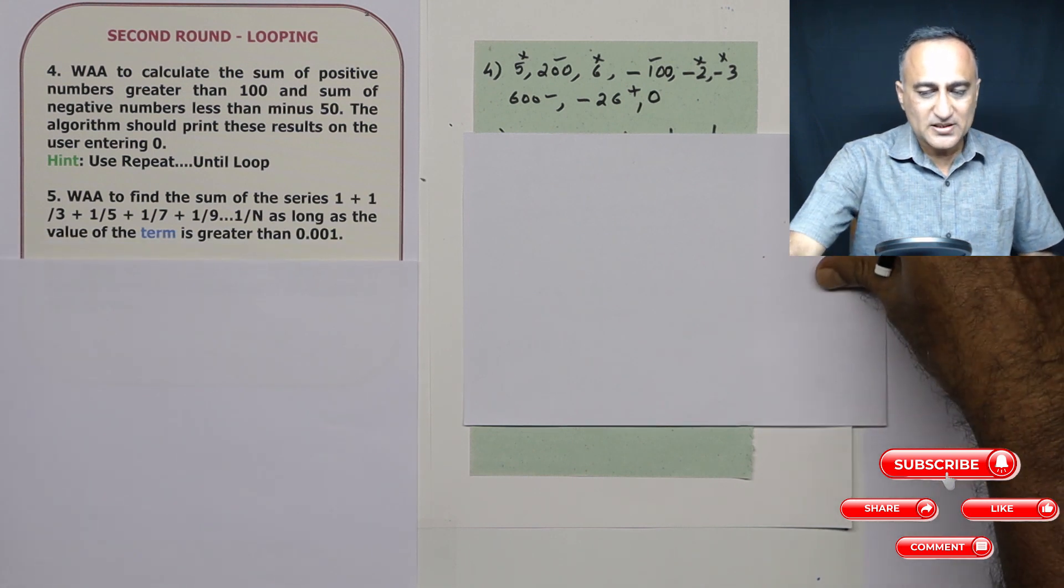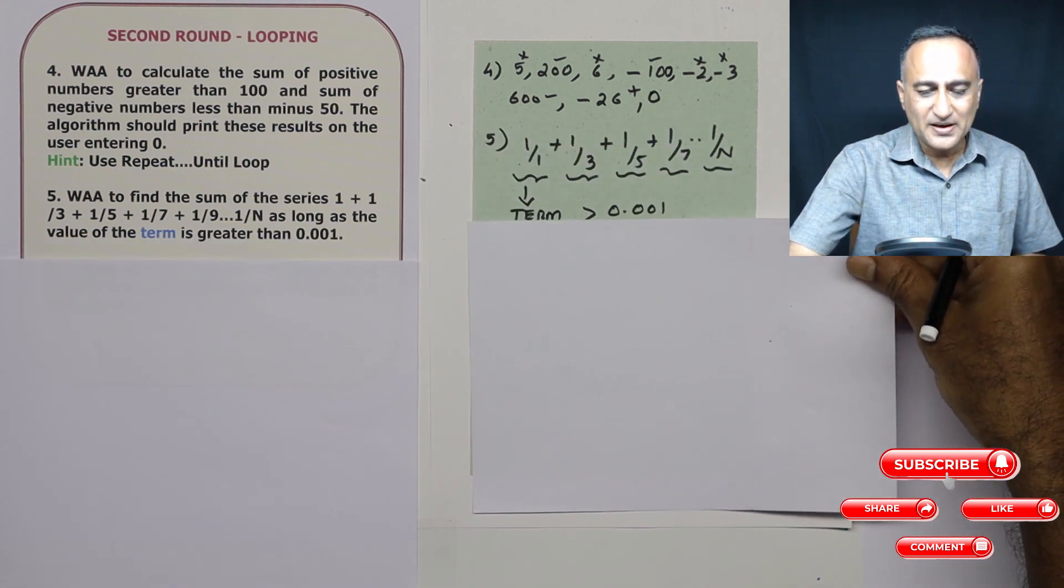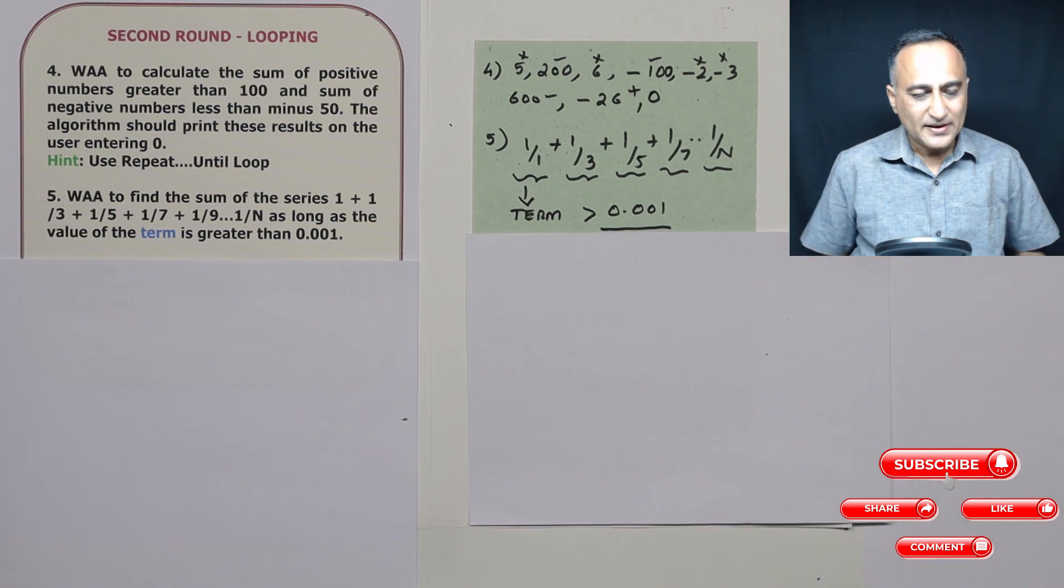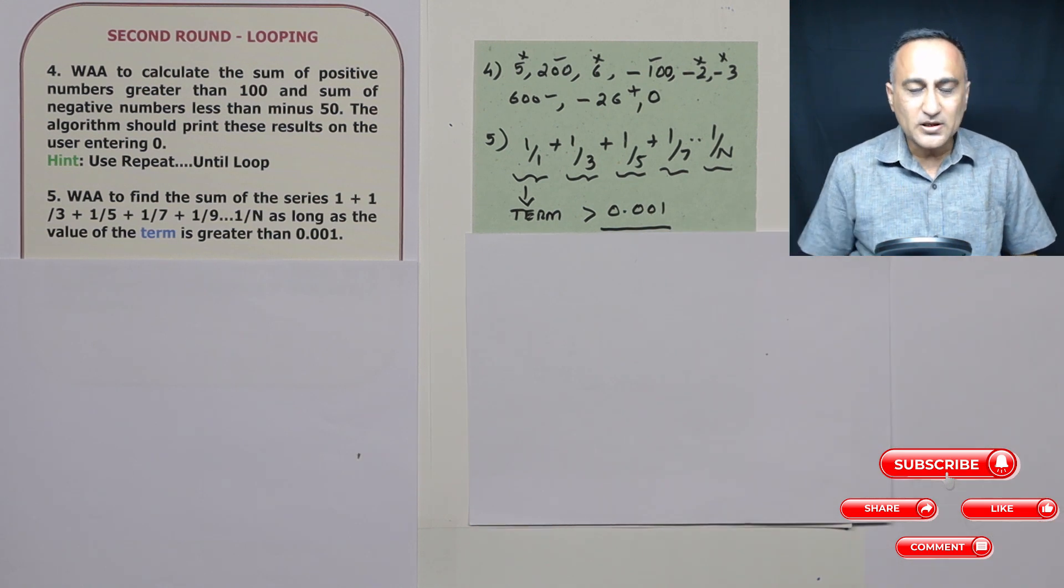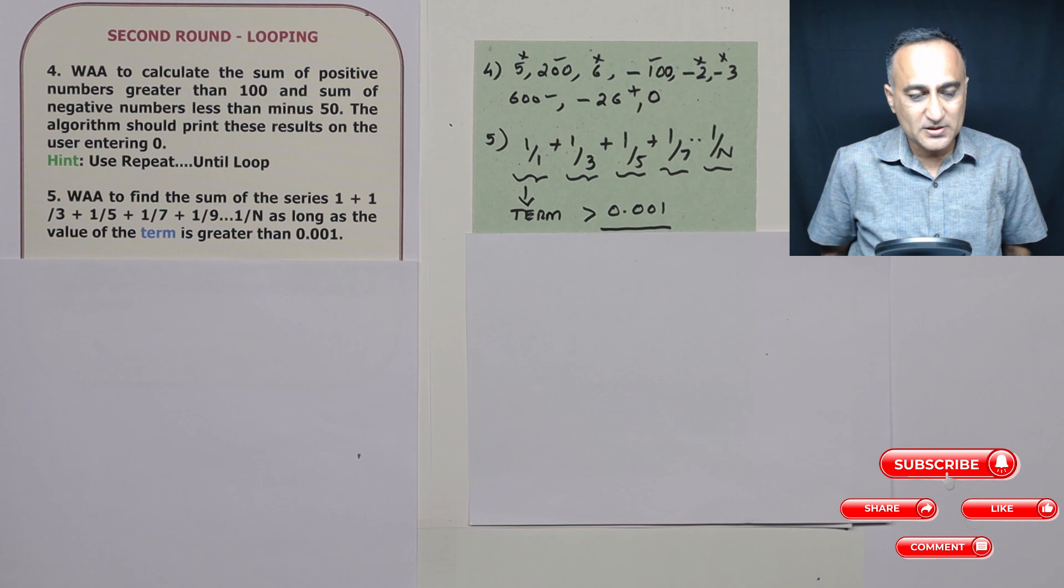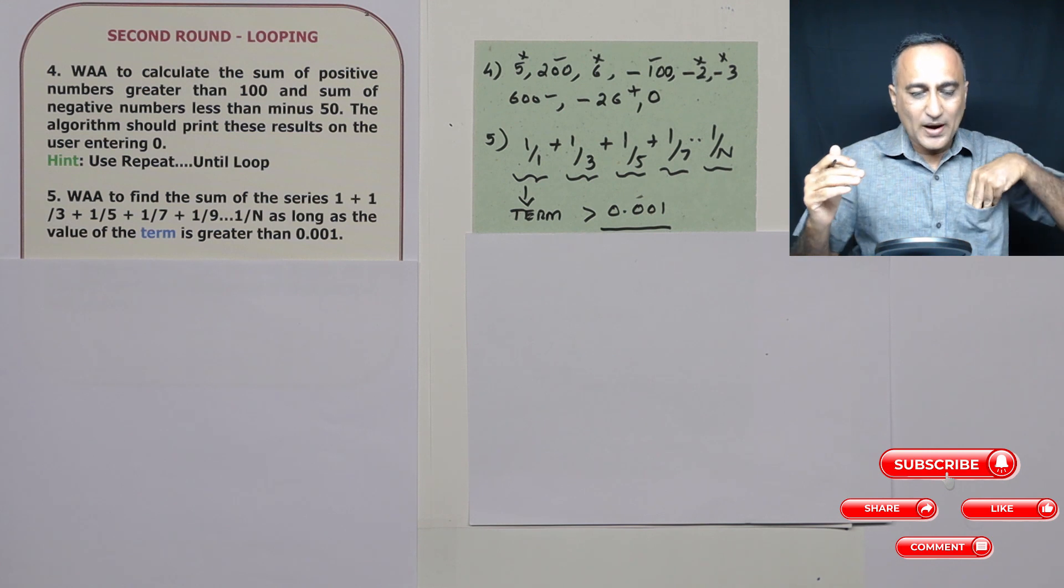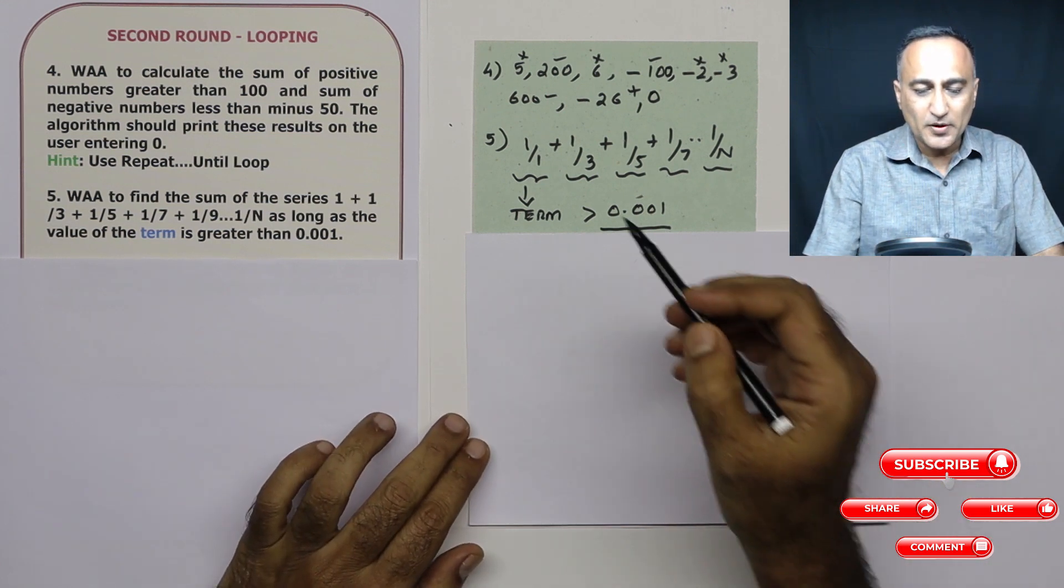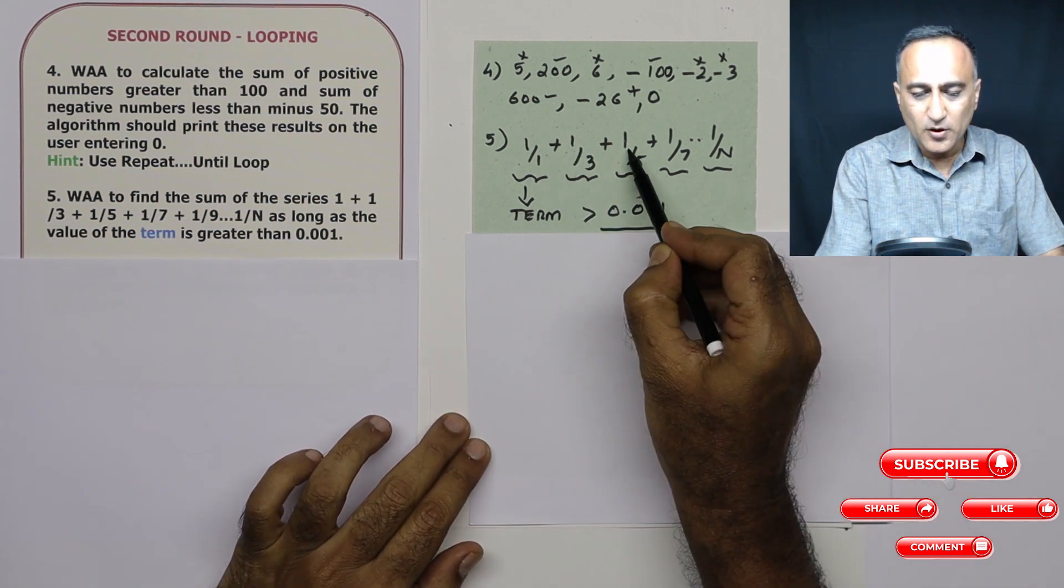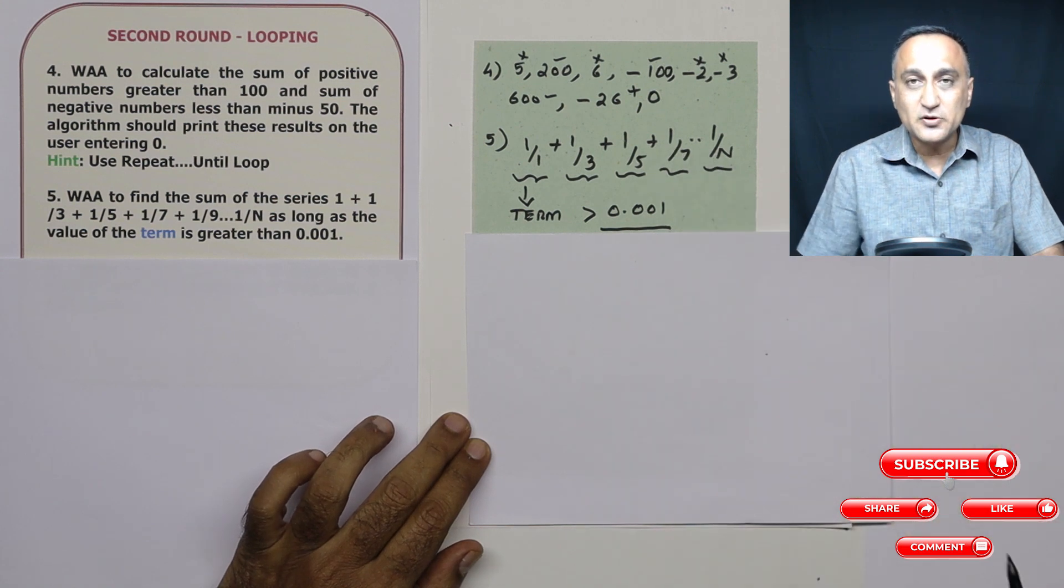Now let's try to understand the next one. This is a simple series: 1 upon 1 plus 1 upon 3 plus 1 upon 5 plus 1 upon 7 plus 1 upon 9. You need to find the sum of this series as long as the value of the term is greater than 0.01. So these are known as terms of the series.